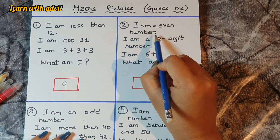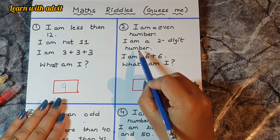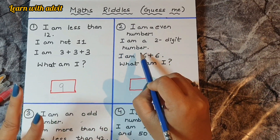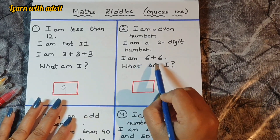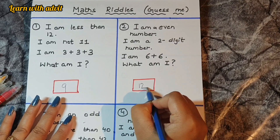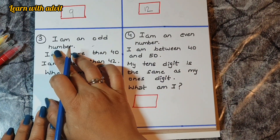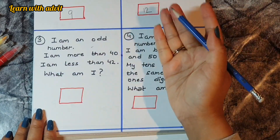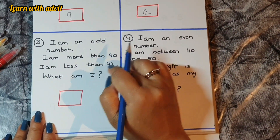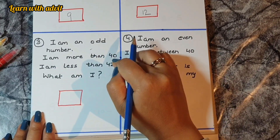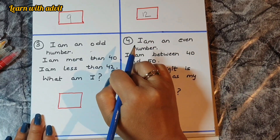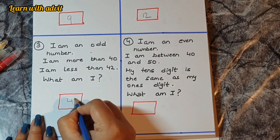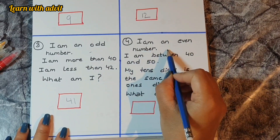Next riddle: I am an even number, I am a 2-digit number, I am 6 plus 6. So 6 plus 6 is 12 — which is even and 2 digits. Another riddle: I am an odd number, I am more than 40, I am less than 42. The number more than 40 and less than 42 is 41, which is odd.